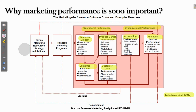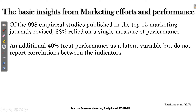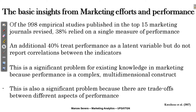This is very important to marketers and researchers because these are usually the response variables of marketing models, and marketers must know how they behave. Discussing the Katsikeyas and colleagues study further: of the 998 empirical studies published in the top 15 marketing journals reviewed, 38% relied on a single measure of performance only, and an additional 40% treat performance as a latent variable but do not report correlations between the indicators. This is a significant problem because performance is a complex multidimensional construct, and there are trade-offs between different aspects of performance — which we will see in the next slide.